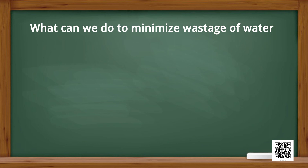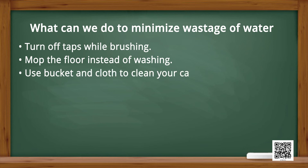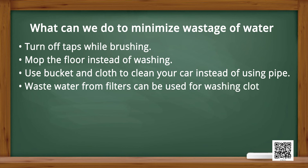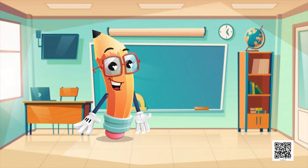So dear children, let us see what we can do to minimize wastage of water. Turn off taps while brushing. Mop the floor instead of washing. Use a bucket and cloth to clean your car instead of using a pipe. Waste water from filters can be used for washing clothes or for mopping. Take a bath by filling water in a bucket and not directly under the tap or shower. Get leaking taps repaired immediately. Every person should use water carefully, wisely, and economically, and prevent its wastage.